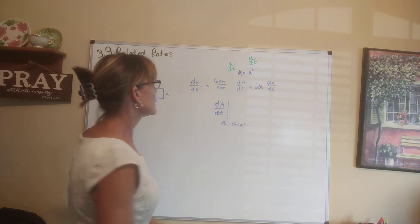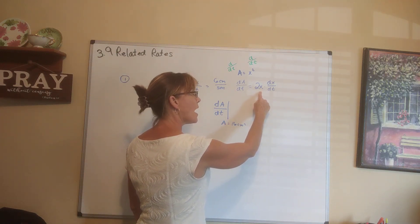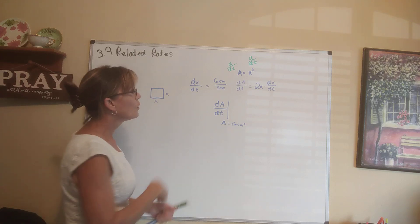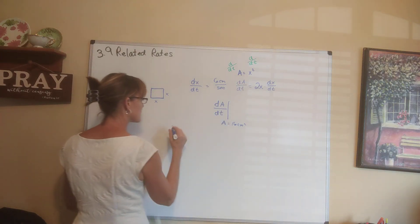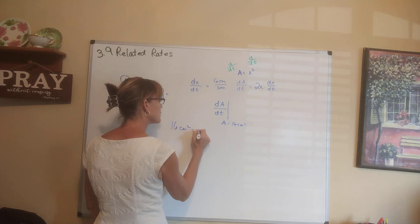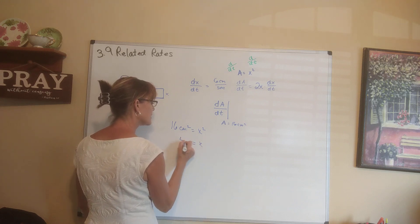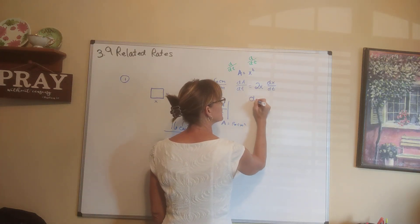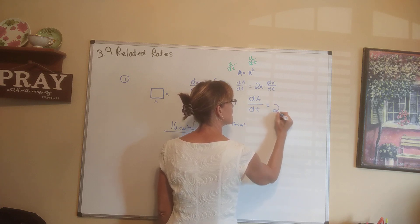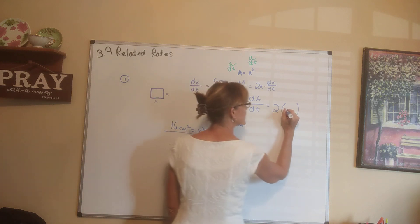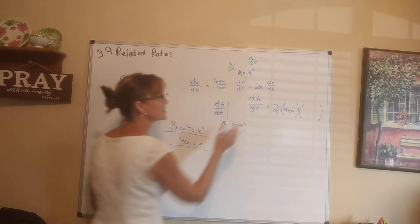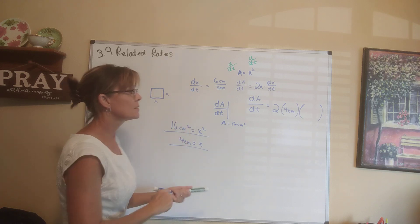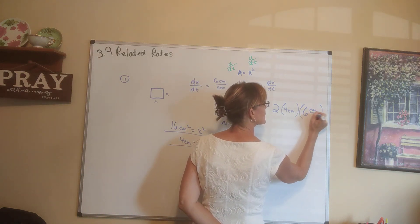To calculate dA/dt we need to figure out what x is. They told us the area is 16 square centimeters, and the formula for area is x squared, so 16 = x squared. Taking the square root of both sides gives x = 4 centimeters. At this moment in time, dA/dt equals 2 times 4 centimeters times the rate of change of the side. They told us that was 6 centimeters per second.